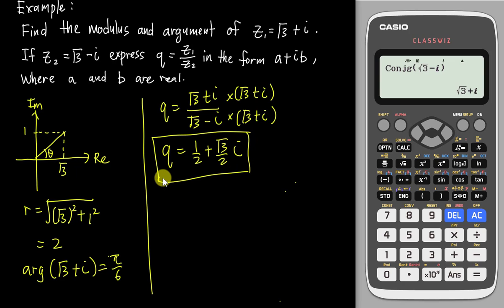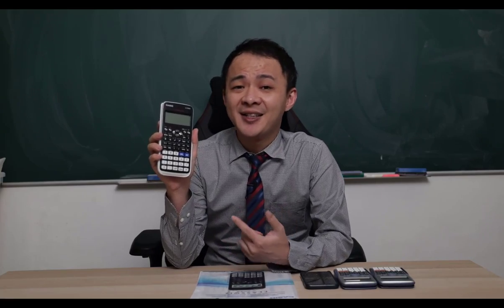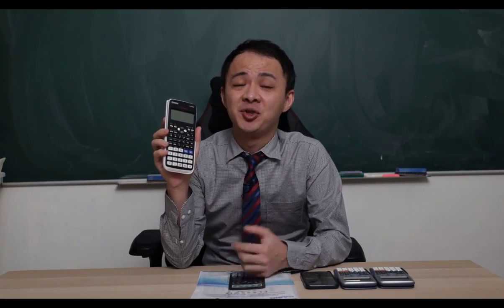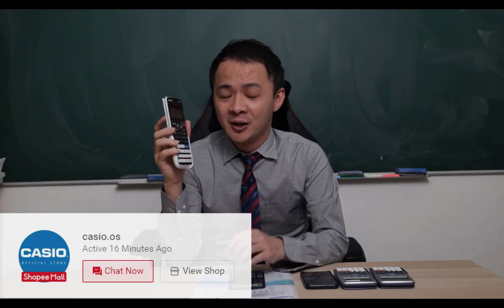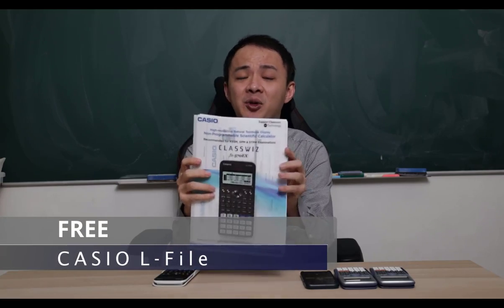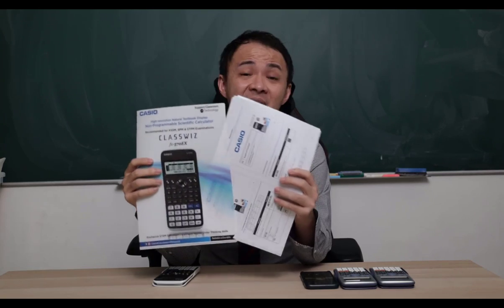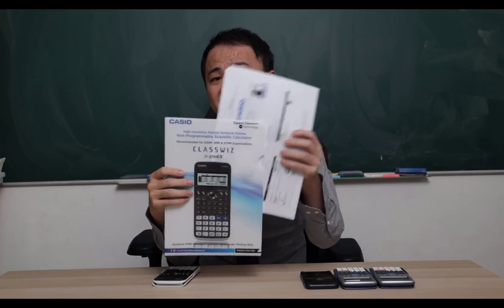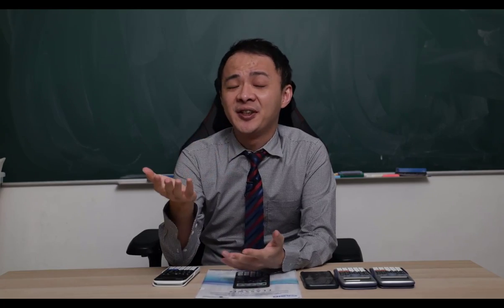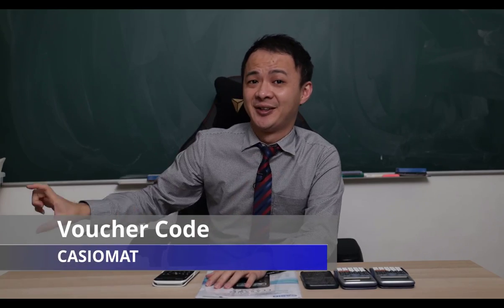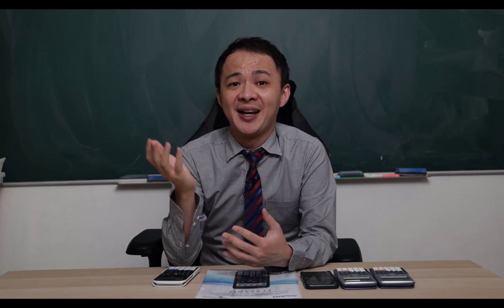Alright, I hope you find this video helpful to you. If you are interested to get this calculator, I will share a Shopee link at the description below. The link will bring you to the Casio official store. So for right now, Casio Malaysia is doing some promotion. Whoever wants to get this calculator from their official store, they will give you a free Casio L file. I believe you know what is Casio L file. Basically, it's a plastic file which you can easily insert some paper here. Besides that, Casio Malaysia also will give you another RM5 discount.